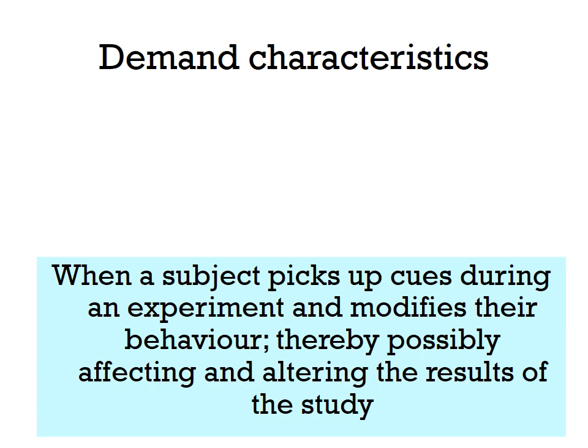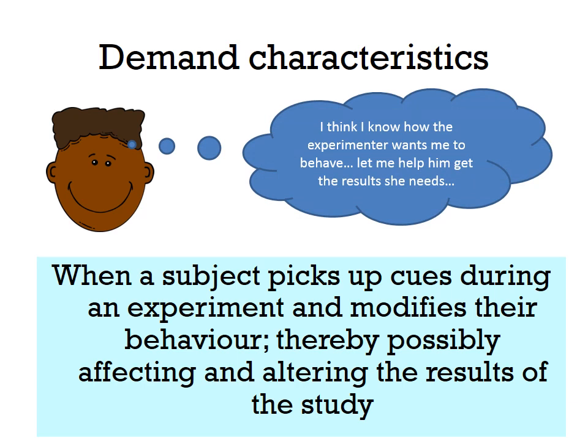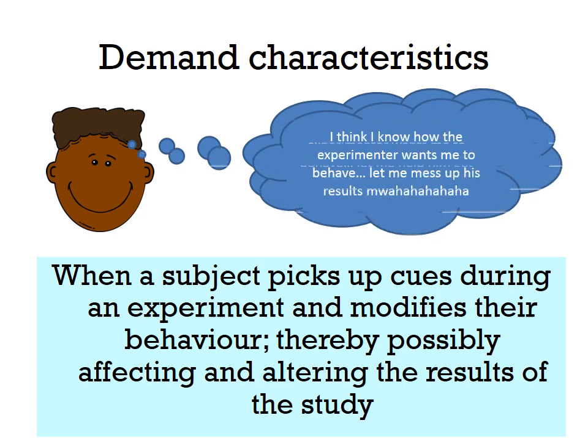Demand characteristics are when a subject picks up cues during an experiment and modifies their behaviour, thereby possibly affecting and altering the results of the study. For example, a participant might work out the true aim of the experiment and decide to change their behaviour to help get the results the experimenter needs — or they could deliberately try to mess up the results.